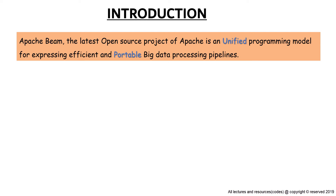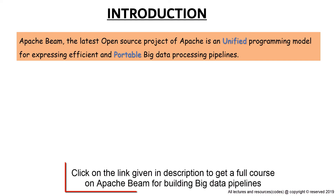Now in our older programming models of frameworks like Hadoop, Spark, and Flink, we have different abstractions and APIs to process batch and streaming data. Like in Apache Spark we have RDDs or DataFrames for batch processing and DataStreams for stream processing. Similarly in Apache Flink we have DataSets for batch and the DataStream API for stream processing.